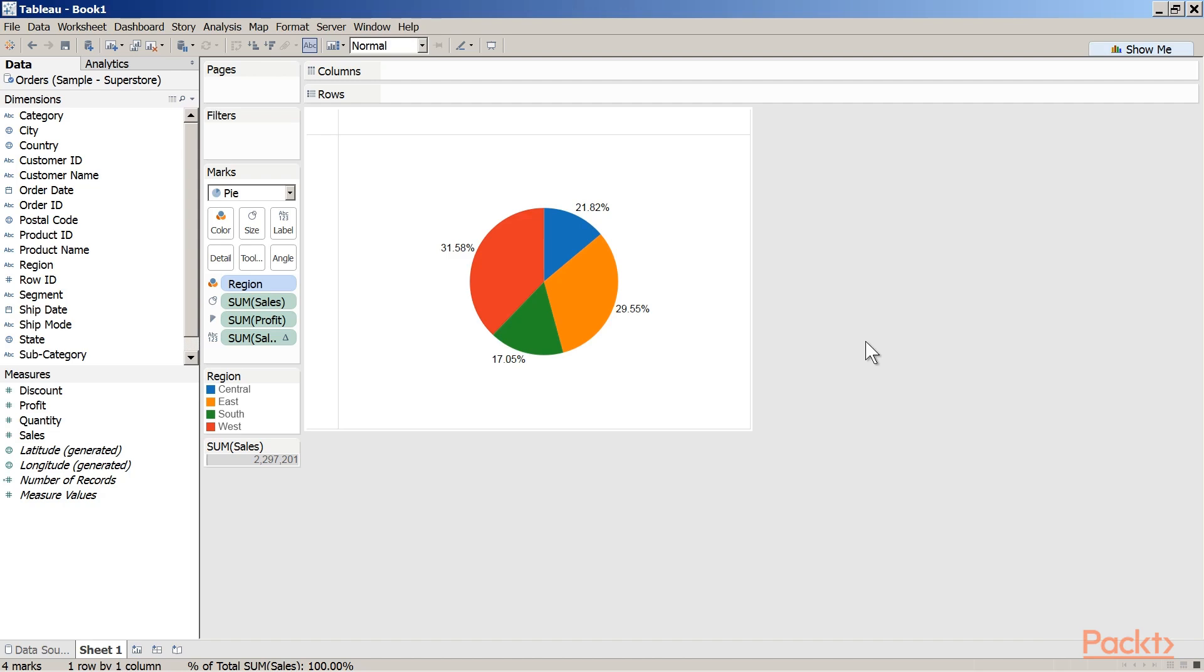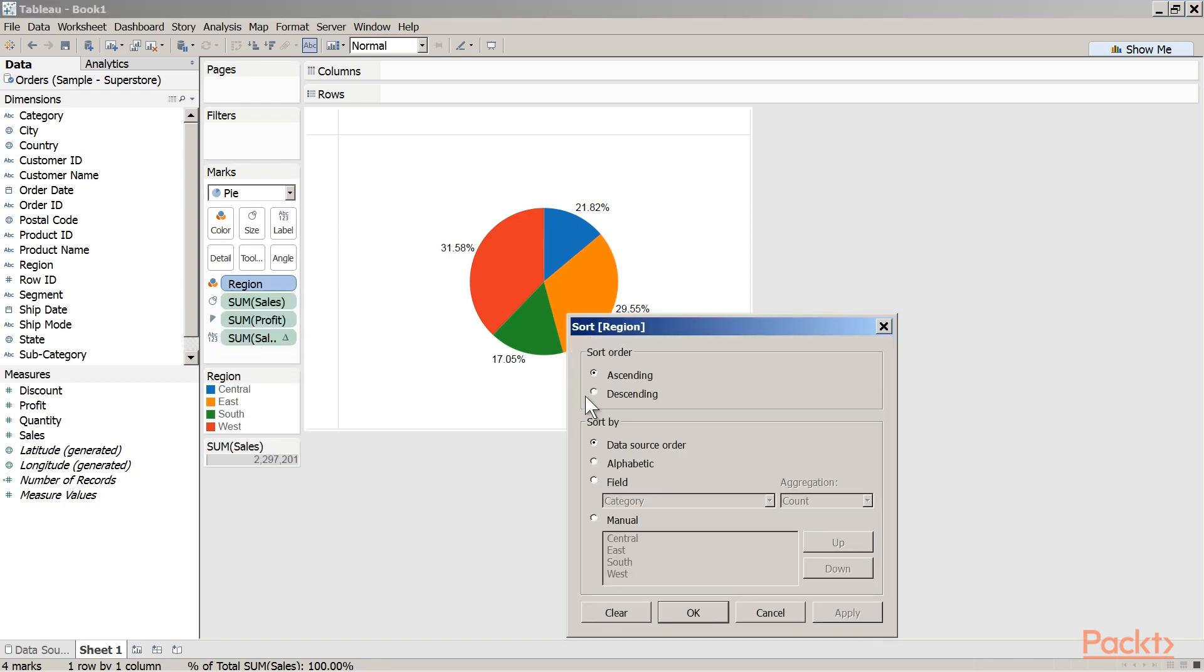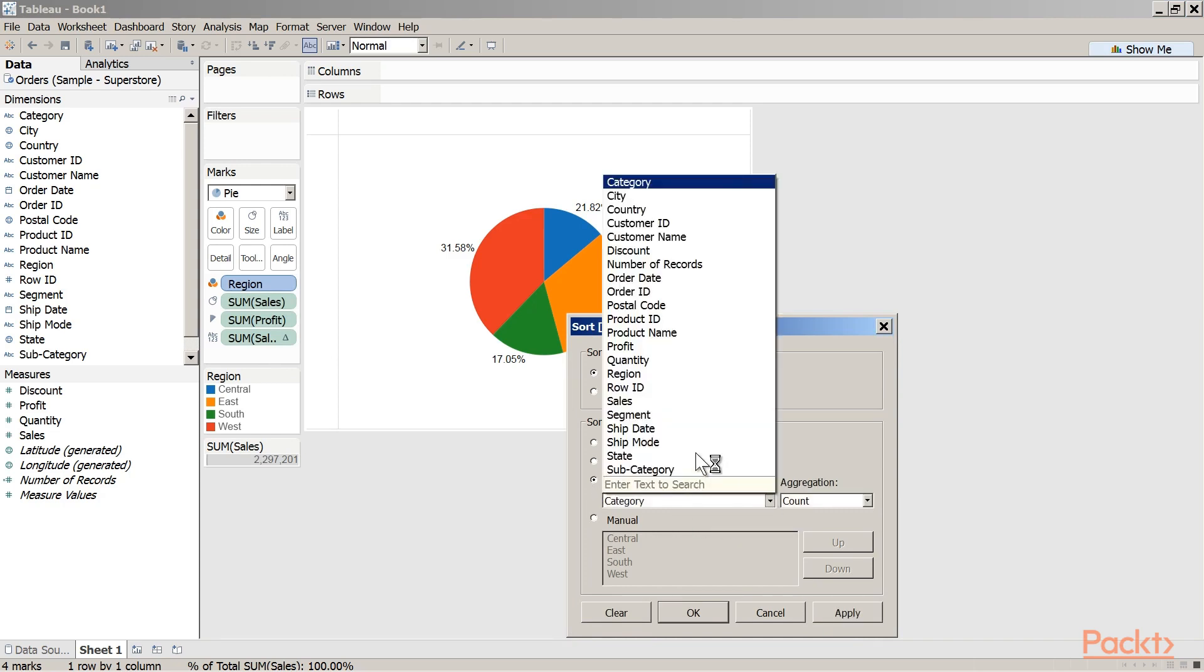It is a good practice to have the slices arranged in ascending or descending order of sales, or one can say slices arranged in order as we traverse in the clockwise or counterclockwise direction. In order to do this, right-click on region to bring up a drop-down menu. Select sort, select the order ascending or descending as desired, and select sort by the desired field, which in our case is sales.